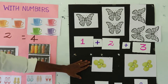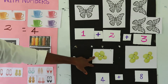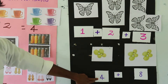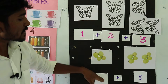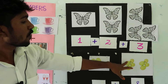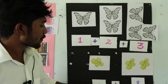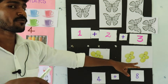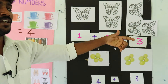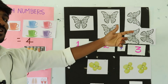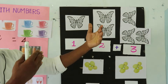Then next one, second one, how many guavas are there? 1, 2, 3, 4, 5, 6, 7, and 8. So 4 plus 4 is equal to 8. 8 plus 4 is equal to 12. 12 plus 4 is equal to 16. 16 plus 4 is equal to 20, and so on.